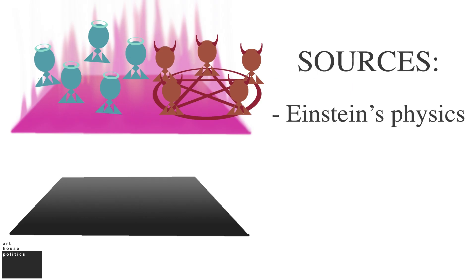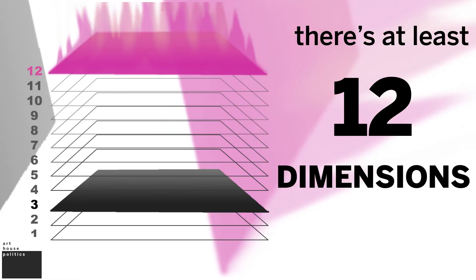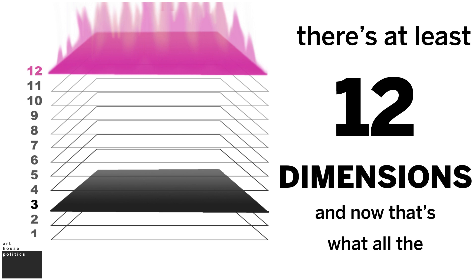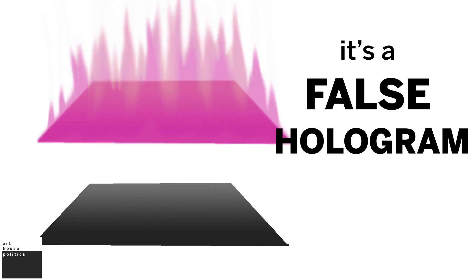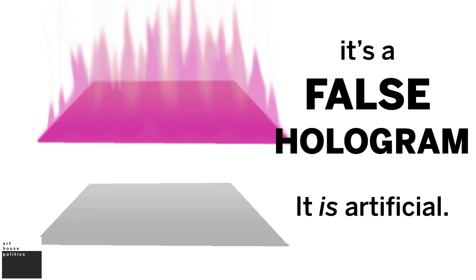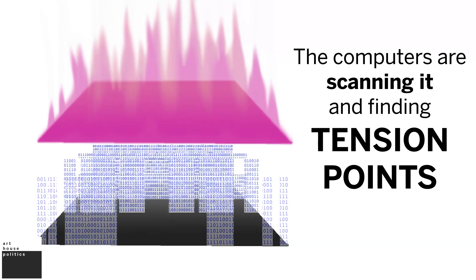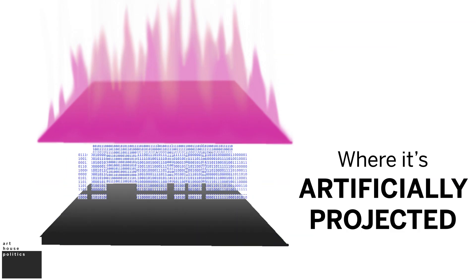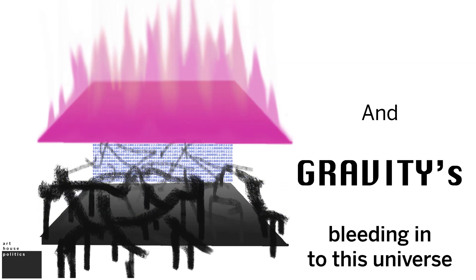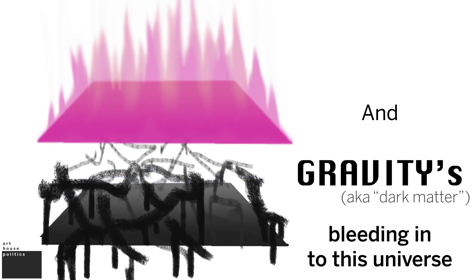We're on this planet and Einstein's physics showed it, Max Planck's physics showed it. There's at least 12 dimensions. And now that's why all the top scientists and billionaires are coming out saying it's a false hologram. It is artificial. The computers are scanning it and finding tension points where it's artificially projected and gravity's bleeding in to this universe. That's what they call dark matter.